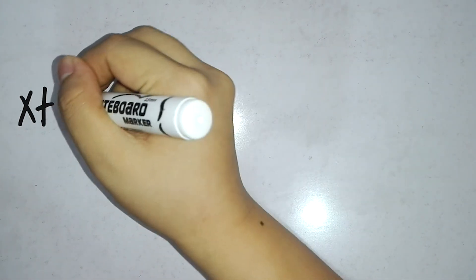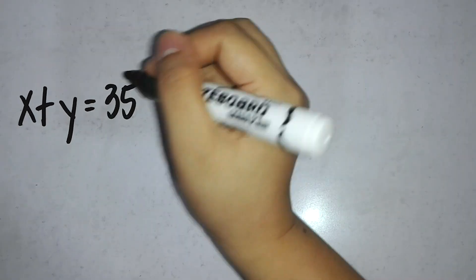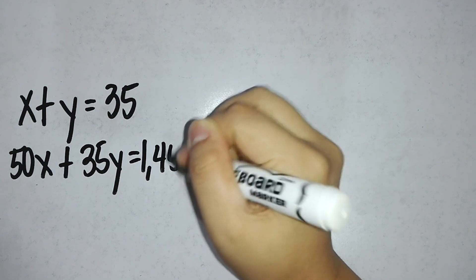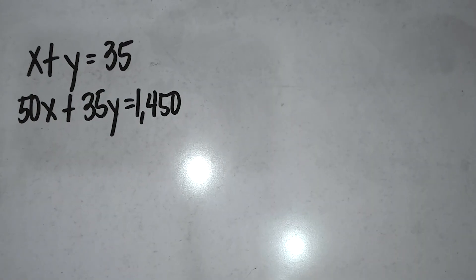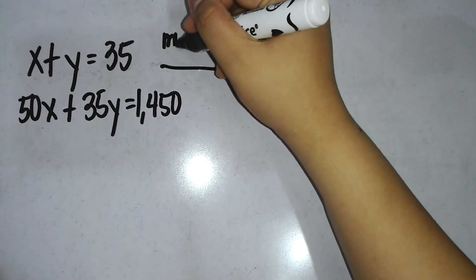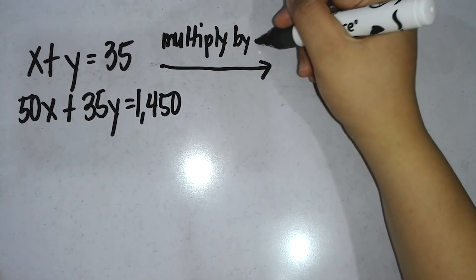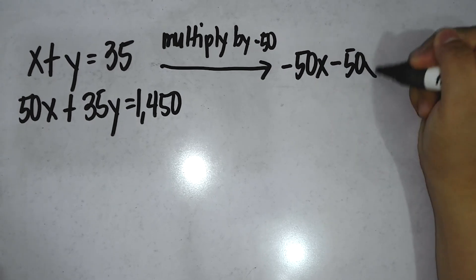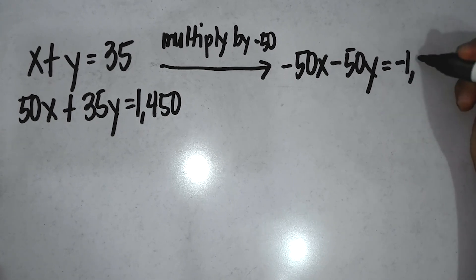Let's go back to the equations earlier and solve using the elimination method. For step 1, write both equations in standard form, ax plus by is equal to c. For step 2, multiply one or both equations by non-zero constants to create opposite coefficients for one of the variables. To eliminate x, we will multiply the first equation by negative 50. We get negative 50x minus 50y is equal to negative 1,750.